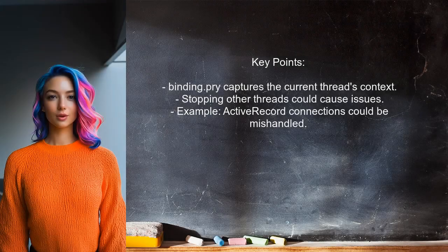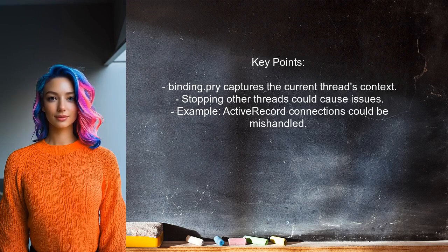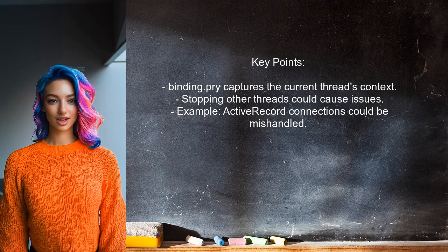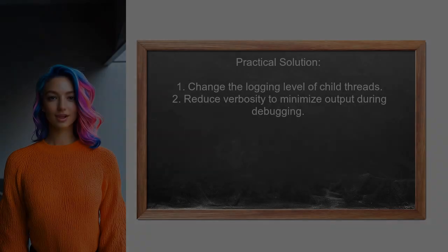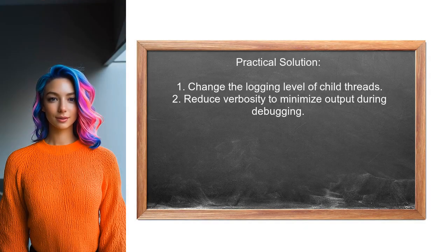They clarify that binding.pry captures the execution context of the current thread only. If it could stop other threads, it could lead to unpredictable behavior, especially if those threads are in the middle of important operations. As a practical solution, they suggest adjusting the logging level of the other threads to reduce their output while debugging.